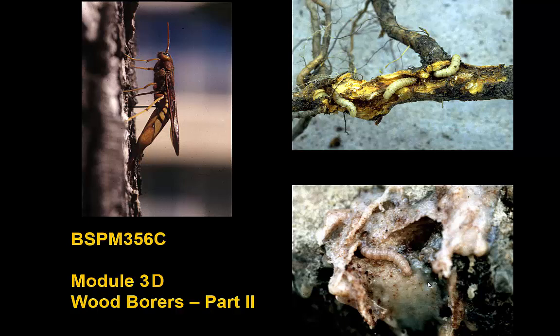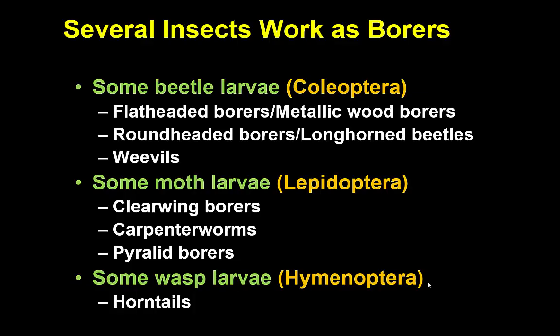There are several kinds of insects that can develop as a borer inside a plant. We've discussed some in the order Coleoptera — beetles that develop as wood borers — but there are others as well. Most importantly, we find these in the order Lepidoptera. Certain kinds of moths have larvae that develop as wood borers: carpenter worms, clearwing borers, and a group called the pyralid borers. There's also one important family of wood-boring wasps in the order Hymenoptera — the horntails, or wood wasps.